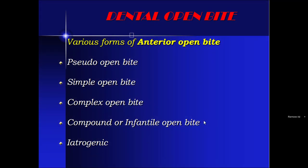Various forms of anterior open bite: First is pseudo open bite, in which overjet is combined with overbite of less than 1 mm. In simple open bite, more than 1 mm of space is observed between incisors with posterior teeth in occlusion. In complex open bite, it extends to premolars or sometimes to deciduous molars. In compound or infantile open bite, it is completely open including the molars. In heterogenic open bite, it is a consequence of faulty biomechanics used during orthodontic treatment.